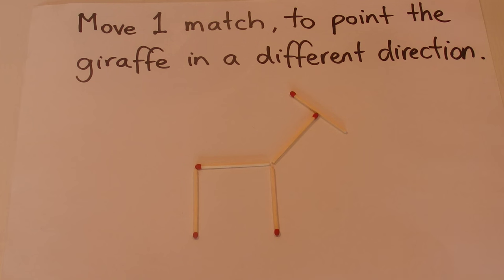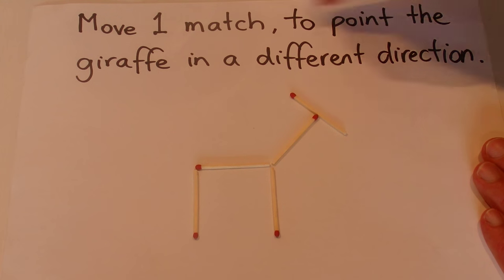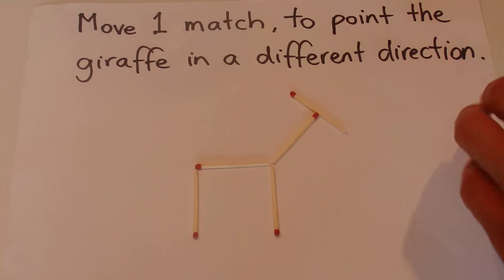And what the question's asking you to do is to move one match and to point the giraffe in a different direction. So just move one match only and the giraffe stays in the same shape but it points in a different direction.